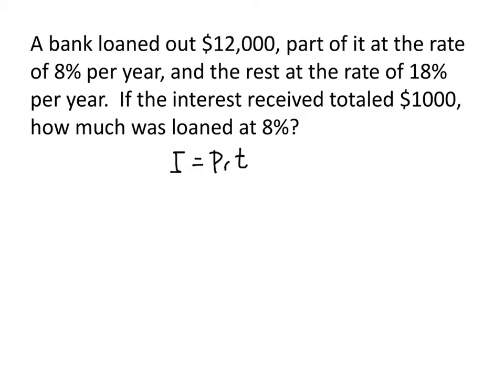In this case, our time frame is one year. We loaned out $12,000, and the interest we get at the end of the year is $1,000, but we're getting interest from two different sources.